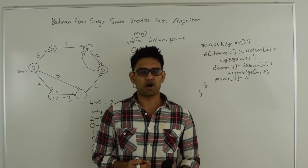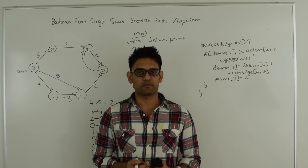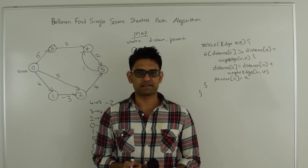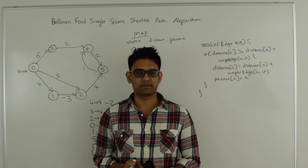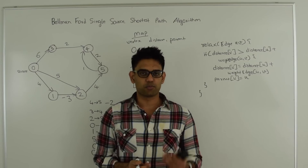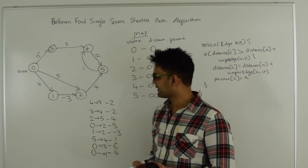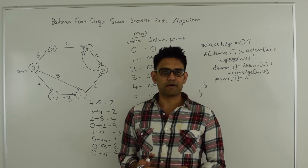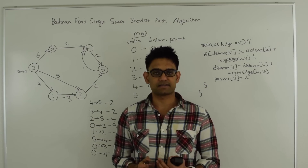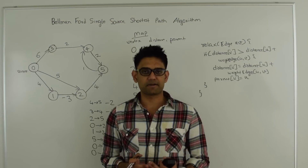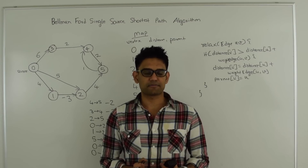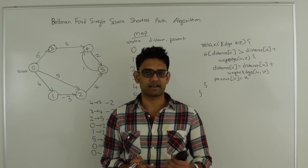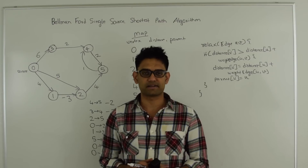In another video I talked about Dijkstra's algorithm which does the exact same thing. But Bellman-Ford has two distinct advantages over Dijkstra's algorithm. Even though it's slower, it works in cases when the weight of an edge is negative, and it also finds negative weight cycles in the graph. If there is a negative weight cycle, you cannot find the shortest distance because you can keep traversing that cycle and keep reducing the distance.